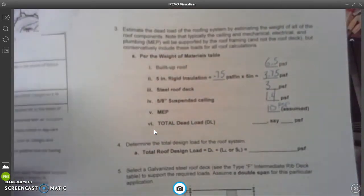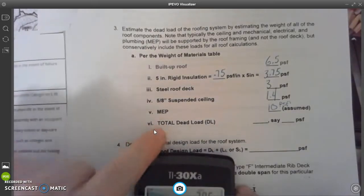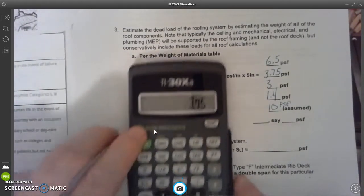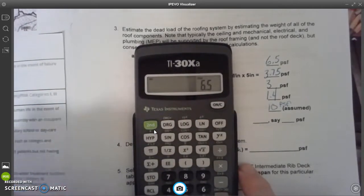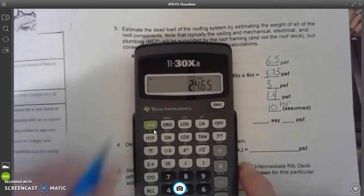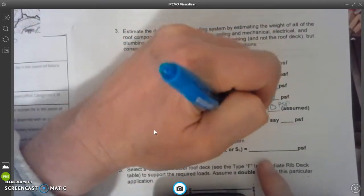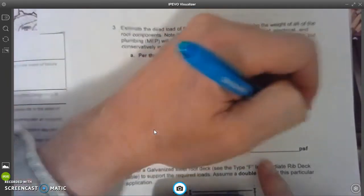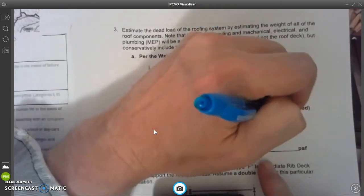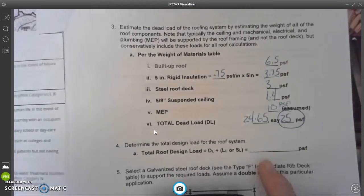Now I'm going to take all of these things and I'm going to add them up. I'm looking for the total dead load here on my roof. So I put in 6.5 plus 3.75 plus 3 plus 1.4 plus the assumed 10. That's going to equal 24.65. So 24.65, and we're going to say we're just going to round this one up to 25 PSF for that number.